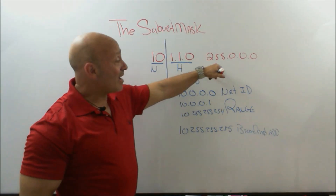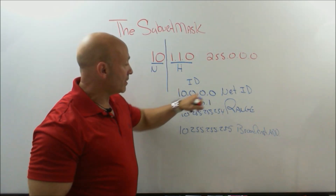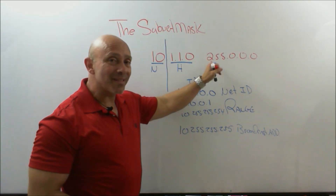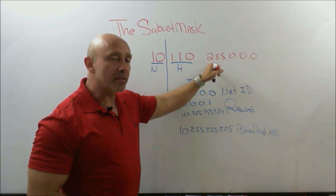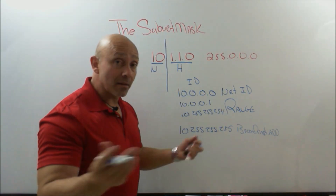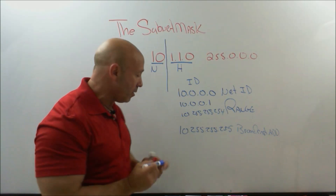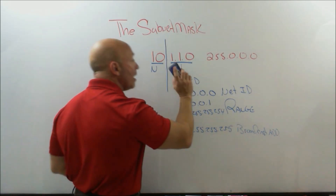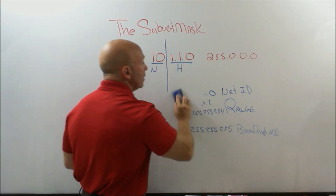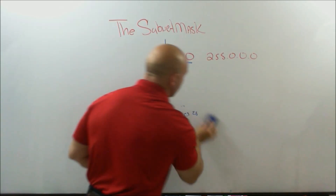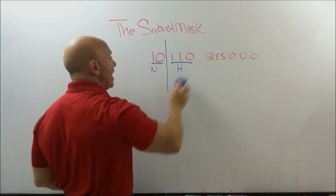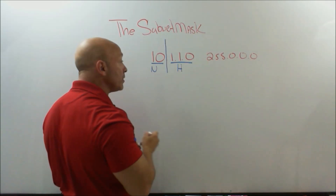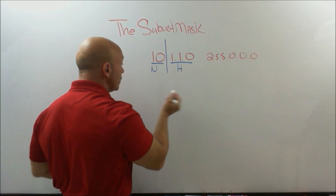This mask determines everything — it is extremely important. The wrong mask is where everybody runs into a problem; they write the wrong mask. But look at what happens if I change it. Now we have that mask, so what happens if we use the same address with a different mask?